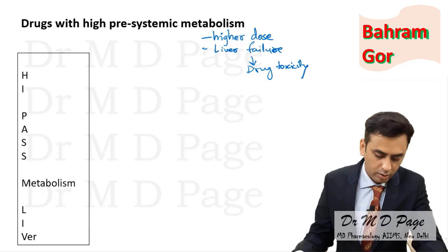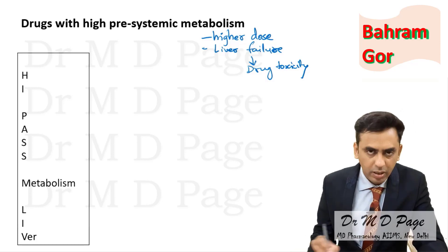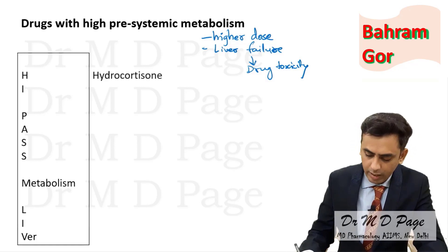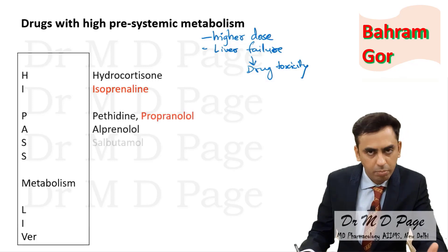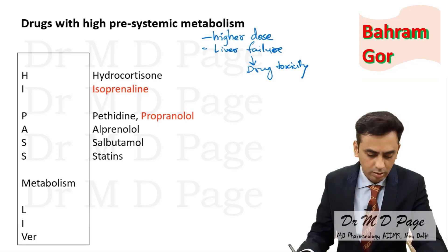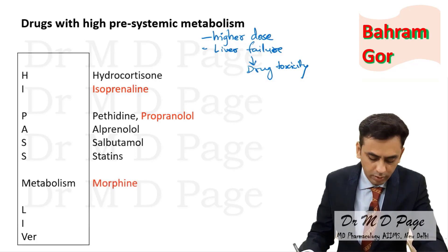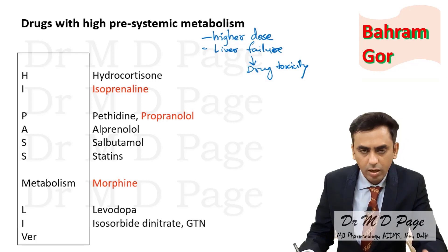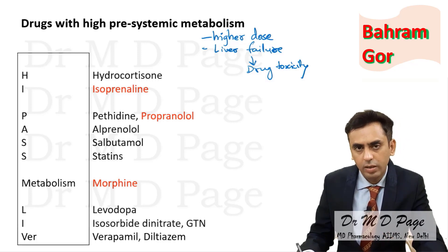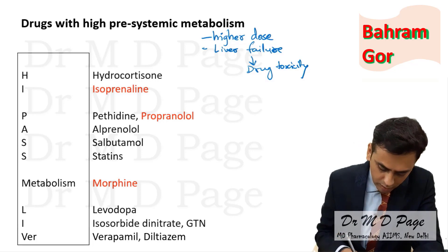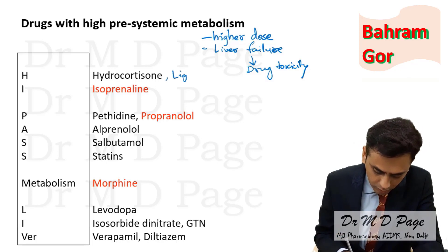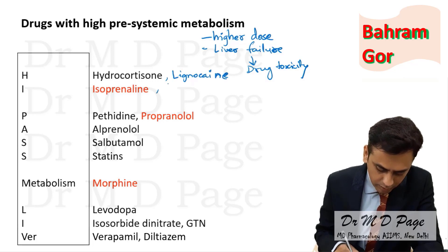To remember drugs with high first-pass metabolism, you can use the mnemonic 'HIGH-PASS METABOLISM LIVER': H for hydrocortisone, I for isoprenaline, P for pethidine and propranolol, alprenolol, salbutamol, and statins, M for morphine, L for levodopa, isosorbide dinitrate, glyceryl trinitrate, and verapamil. Additionally, lidocaine (lignocaine) and testosterone also undergo high first-pass metabolism.